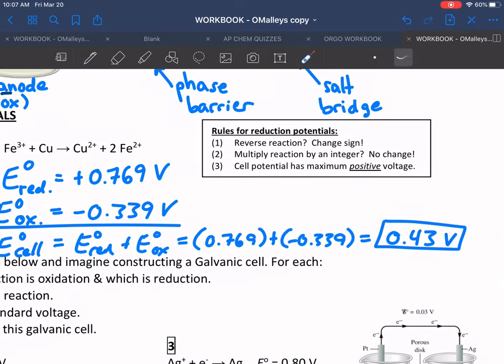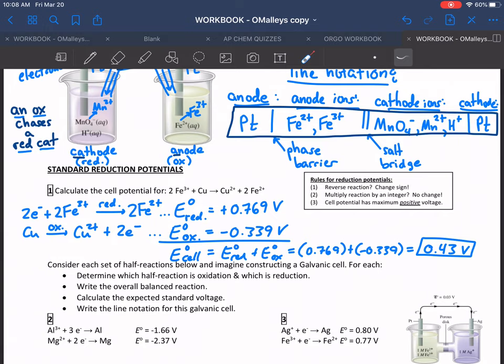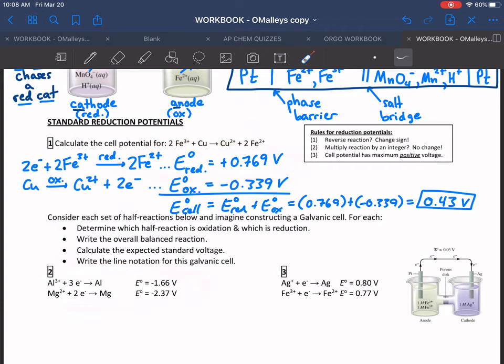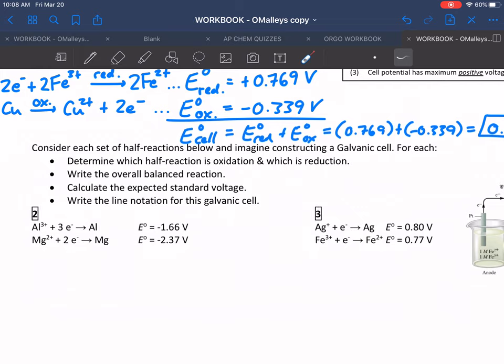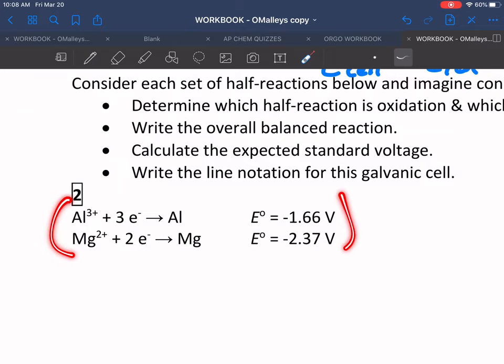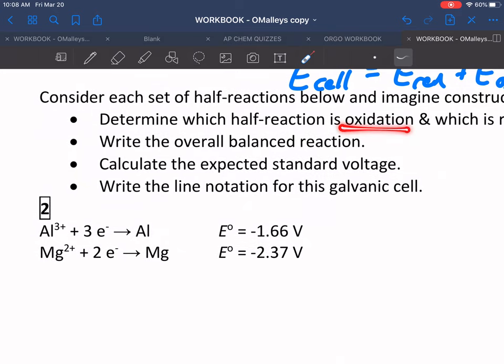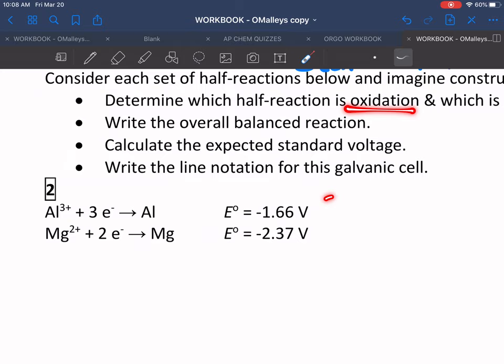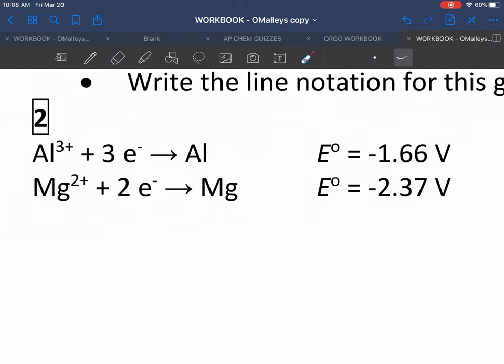So sometimes we're given multiple half reactions as reductions, and we need to figure out which one we flip. I'd like you to hit pause and try the last two problems at the bottom. Here's a pair of half reactions. They're both reductions - I can tell because electrons are reactants. Determine which one is the oxidation and which is the reduction. In other words, which one are we going to flip and make into an oxidation? Write the overall balanced reaction, what's the expected voltage, and what's the line notation? Try that for each of those and then check back.